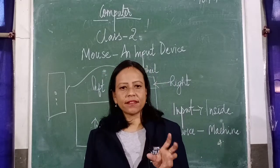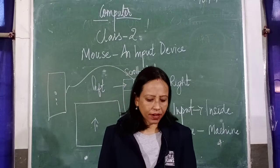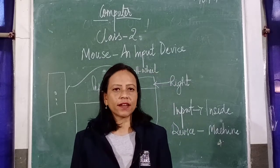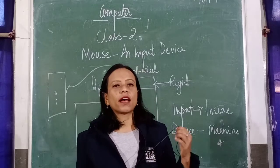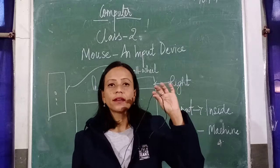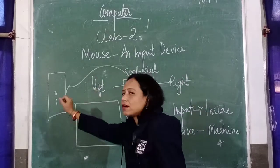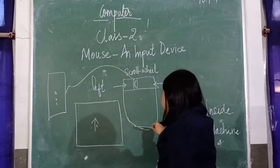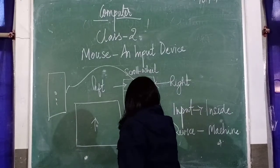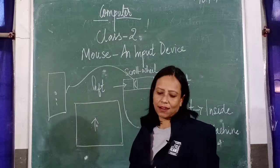Why do we call it a mouse? Because it is shaped like a real mouse — a rodent. Rodent means a small animal such as a mouse. These mice have a long wire. This mouse, with the help of a wire, is connected to the CPU. So it has a body like a mouse, and it has a long wire connected to the CPU which looks like the tail of a mouse.